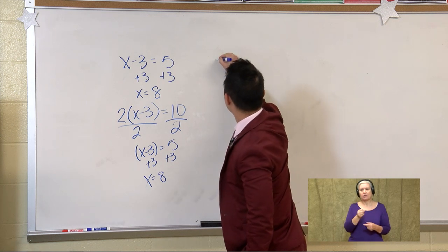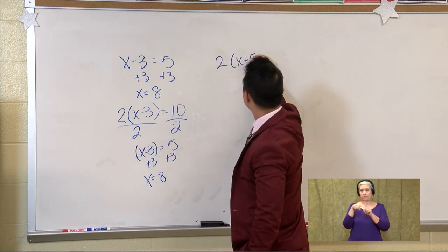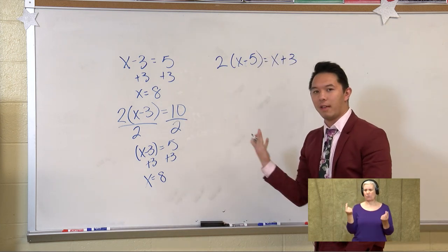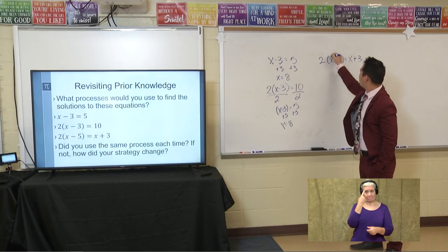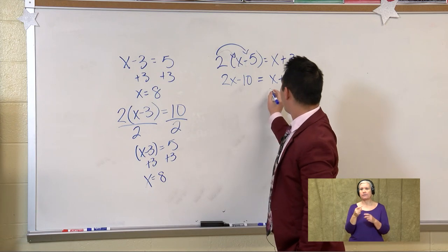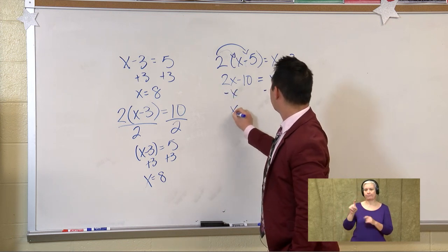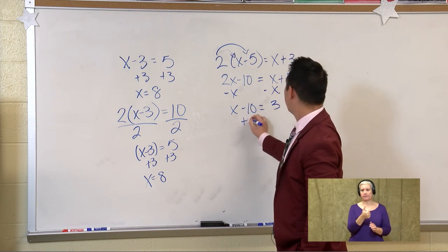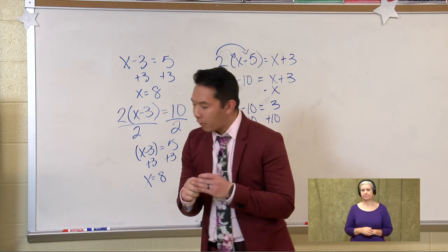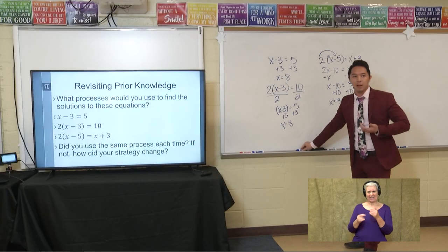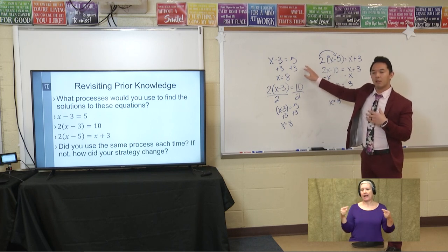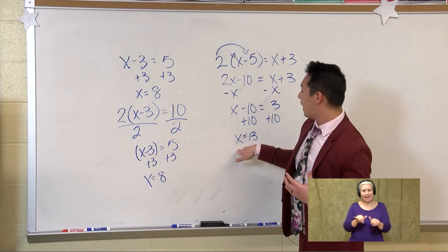Going into that last equation, 2 times the quantity x minus 5 is equal to x plus 3. If we distribute, we have 2x minus 10 is equal to x plus 3. We're going to combine like terms by subtracting x from both sides, leaving us with x minus 10 is equal to 3, and then adding 10 to both sides, so x is equal to 13. Did we use the same process each time? The answer is yes — I'm performing inverse operations each time. The strategy of isolating the variable didn't change.